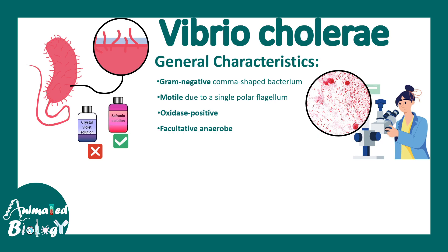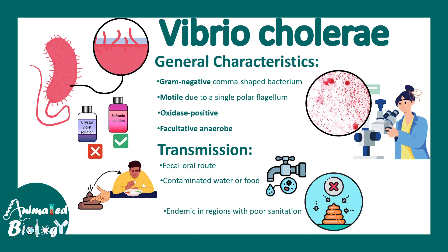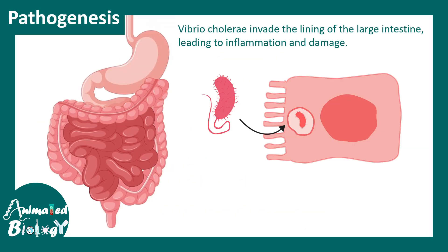Vibrio cholerae looks exactly like a comma in a gram stain when a pathologist sees it under the microscope. Transmission happens via the fecal-to-oral route. It can also happen via contaminated food or water, especially seafoods which are not properly cooked. This is endemic in regions of poor sanitization, especially relevant for third world countries.